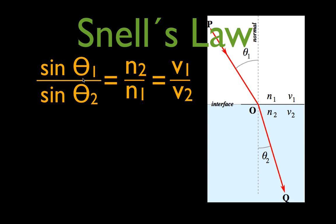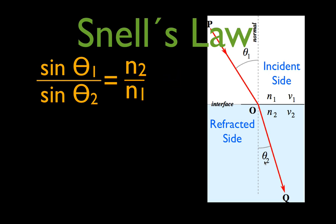This is Snell's Law. It's the ratio of the sine of the two angles is equal to the ratio of the two indices of refraction, and that is also equal to the velocity of light in either of the materials. Usually when we have Snell's Law, I like to think of the side the light rays are coming in from as the incident side, and I keep V1, N1, and theta1 together. The other side is the refracted side — that's V2, N2, and theta2. Typically we don't use the velocities because they tend to be big numbers; we just use the indices of refraction to describe the optical properties of each material.